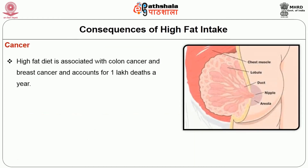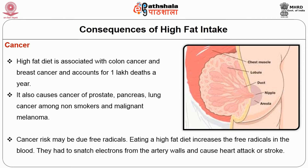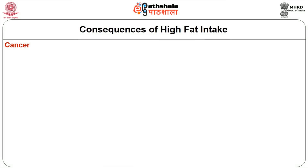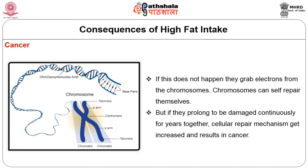High fat diet is associated with colon cancer and breast cancer and accounts for 1 lakh deaths per year. It also causes cancer of the prostate, pancreas, lung among non-smokers and malignant melanoma. Cancer risk may be due to free radicals. Eating a high fat diet increases free radicals in the blood, which grab electrons from chromosomes. Although chromosomes can self-repair, if damage is prolonged continuously for years, cellular repair mechanisms get overloaded and result in cancer.